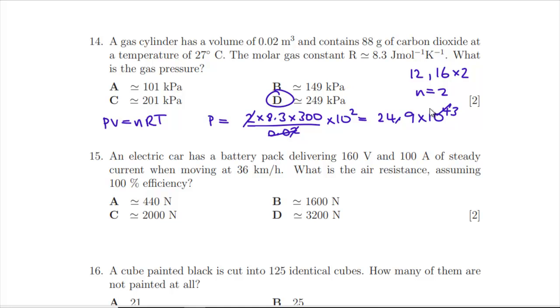Question 15: An electric car has a battery pack delivering 160 V and 100 A of steady current when moving at 36 km/h. What is the air resistance? The power is volts times amps, so it's 16,000 joules per second. 36 km/h—let's get that into meters per second: 36,000 meters divided by 3600, so that's 10 meters per second. Force times distance equals work done, so the force must be 1600 Newtons, which is B.